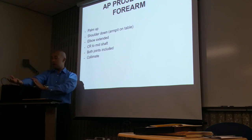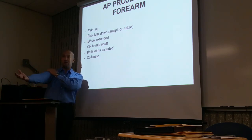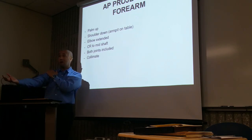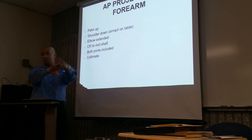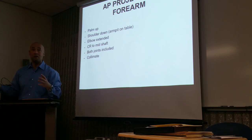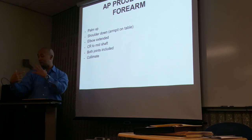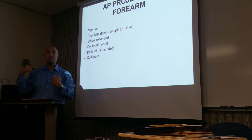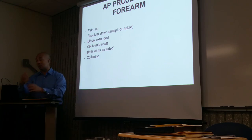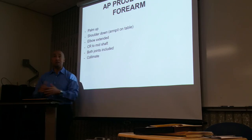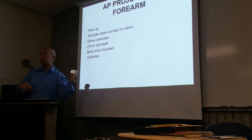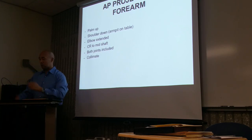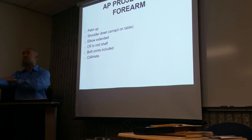For the humerus and shoulder, clear the patient of clothing, bra straps, necklaces, and dangling earrings — anything from the wrist to the shoulders and clavicle. Long hair may need to be moved to the opposite side. Any time we take x-rays, we need to include the adjoining anatomy. For the forearm, clear all jewelry and other artifacts including clothing.